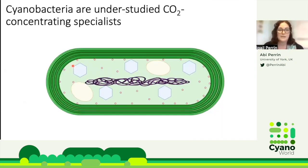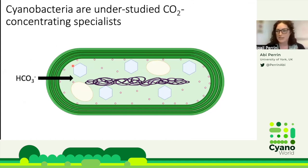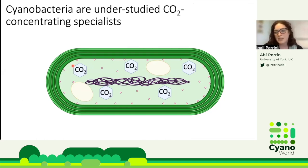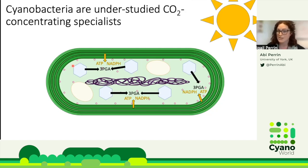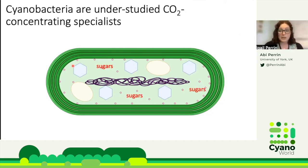One thing particularly fascinating about cyanobacteria is their carbon dioxide concentrating mechanisms. Bicarbonate, the form of inorganic carbon most commonly found in aquatic environments, is actively transported into the cyanobacterial cell. In specialized micro-compartments called carboxysomes, this bicarbonate is converted into carbon dioxide. These carboxysomes are packed with RuBisCO, and the high concentration of carbon creates optimal conditions for the enzyme and substrate to meet, releasing a three-carbon compound into the cytoplasm, which then combines with products of the light-dependent reactions of photosynthesis occurring in the thylakoid membranes.